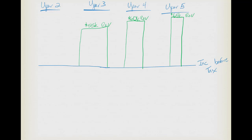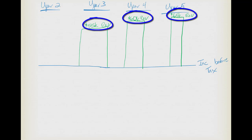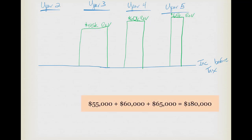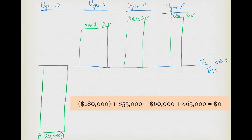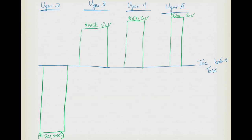Because it's a temporary difference, if I have $55,000, $60,000, and $65,000 to recognize in the future, I must not be recognizing it now. Adding those up: $55,000 + $60,000 + $65,000 = $180,000. That means for tax purposes this year I'm at negative $180,000 for this difference. If I add up all four years across the timeline, they sum to zero — that's what makes it a temporary difference.